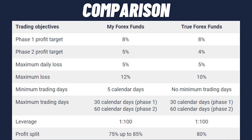For the second comparison, we're looking at My Forex Funds versus True Forex Funds. On profit targets, My Forex Funds requires 8% in Phase 1 and 5% in Phase 2, while True Forex Funds requires 8% in Phase 1 and 4% in Phase 2. On loss limits, both have a 5% maximum daily loss, but True Forex Funds has a lower maximum loss limit of 10% compared to My Forex Funds' 12%. On minimum trading days, My Forex Funds requires five calendar days per phase; True Forex Funds has no minimum trading day requirement.